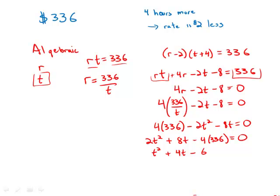So now what I want is two numbers that have a product of negative 672, and when you add them together you get plus 4. So one of them has to be negative, the larger has to be positive, and after a little trial and error what we get is that the numbers are plus 28 and minus 24.